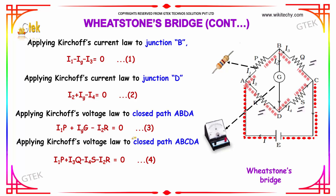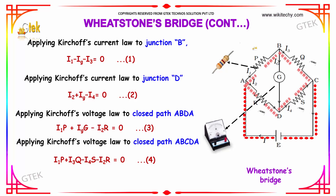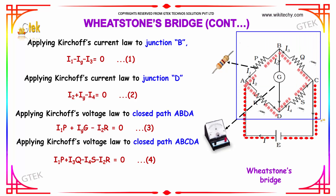Consider the closed path A-B-C-D-A. We will be getting I1 into P, plus I3 into Q, minus I4 into S, minus I2 into R is equal to 0. This is Kirchhoff's voltage second law — the voltage law.